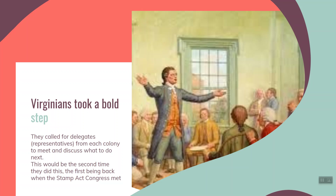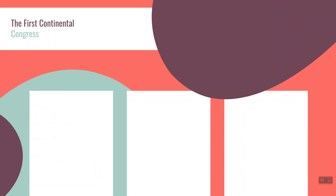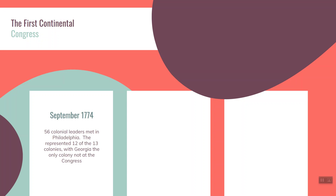Pennsylvania sent barrels of flour, South Carolina sent rice, Connecticut sent money, and Virginia sent wheat and corn. Virginia's leaders went even further — they set aside a day of fasting and prayer for Boston. This shows that colonists in all the other colonies were upset about the Intolerable Acts. If Great Britain could do this to Massachusetts, could they come into any other colony and do the same thing? Virginia's leaders declared the Intolerable Acts a threat to liberty in every colony. They called for delegates from each colony to meet and discuss what to do next.